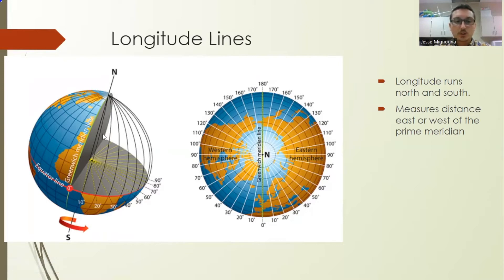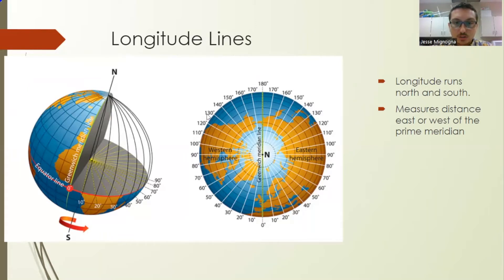Here's the tricky thing with longitude. As you go west from the prime meridian, the numbers get bigger. The FAA is concerned with the United States, so it's almost always going to be between about 70 degrees west longitude and maybe 130 degrees west at the most. Just know: as you go west, the numbers get bigger; as you go east, the numbers get smaller.